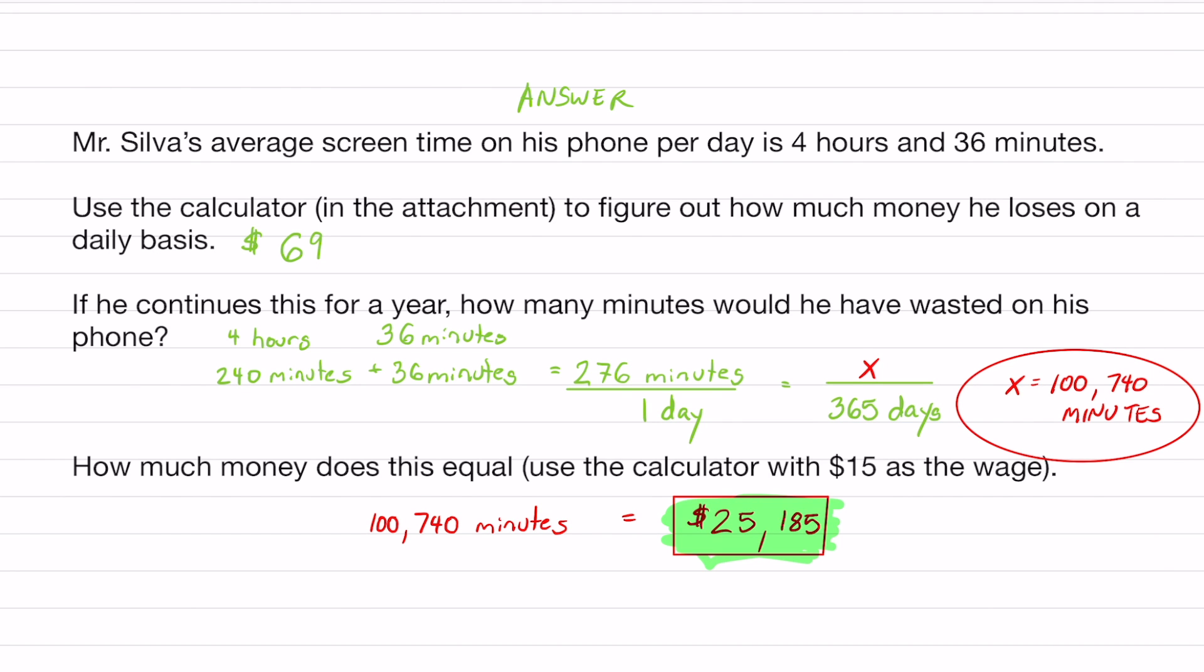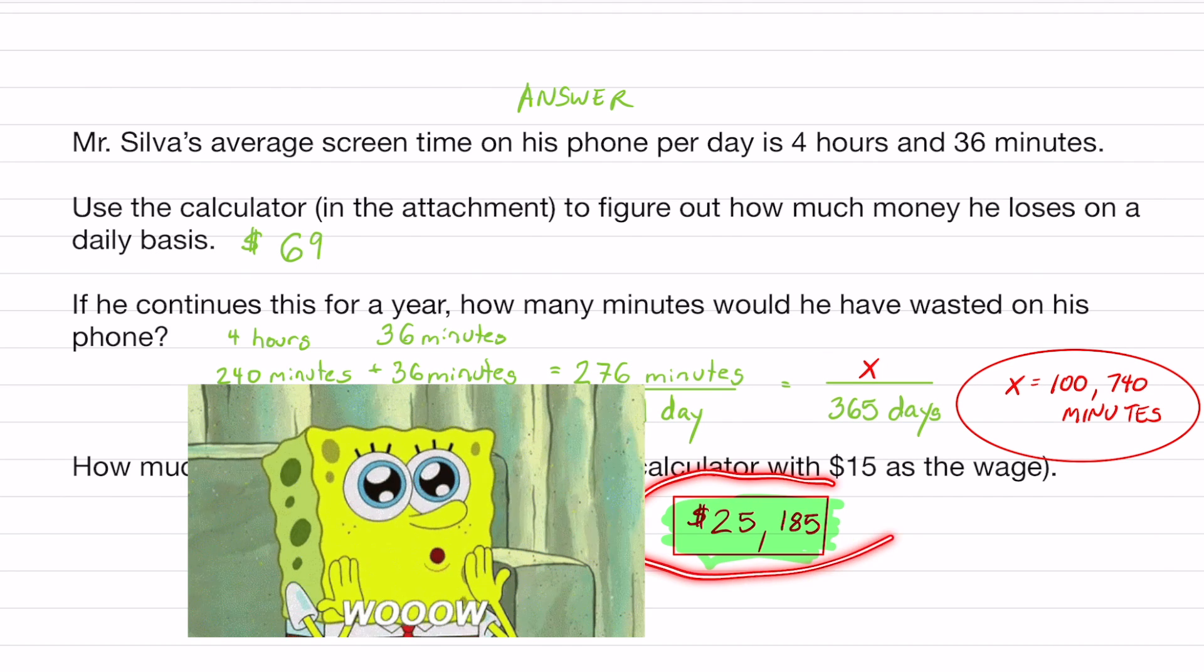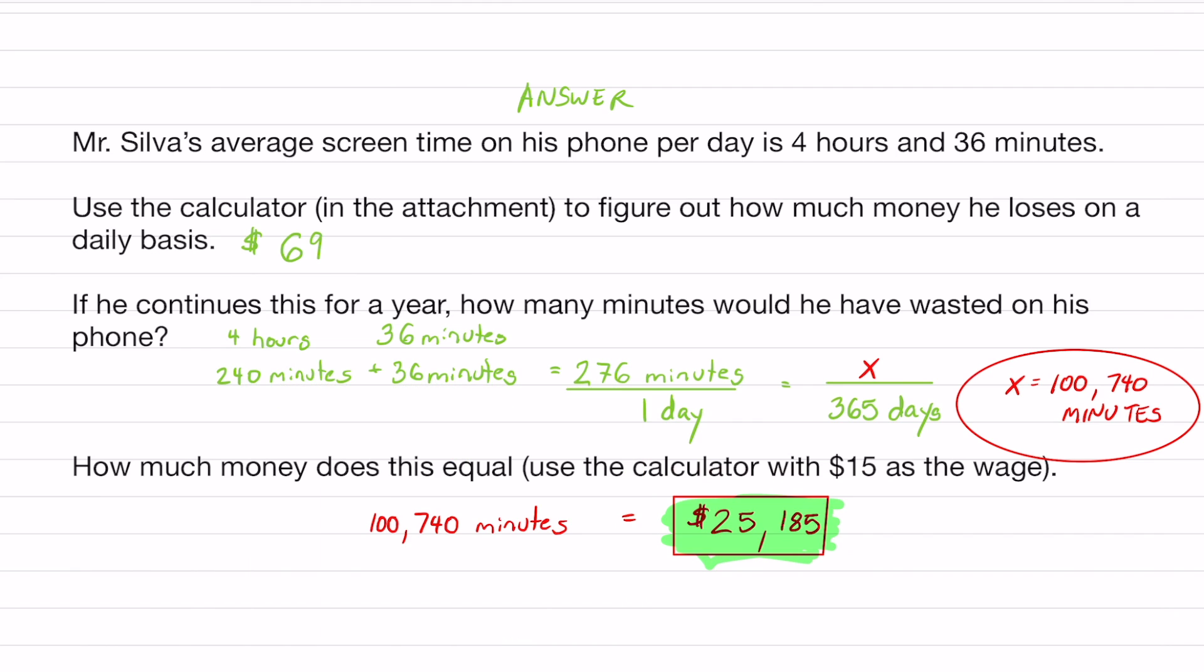If I use my calculator, this is mind blowing. That's about $25,185. If that's me making $15 an hour, which is about to be the minimum wage.